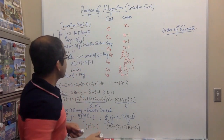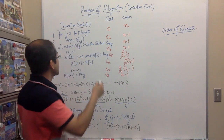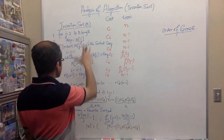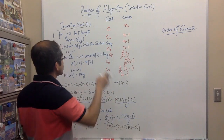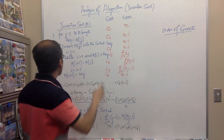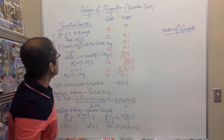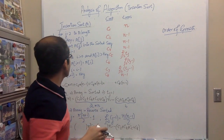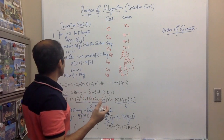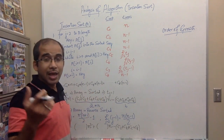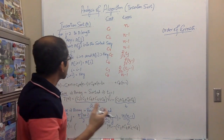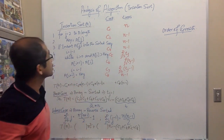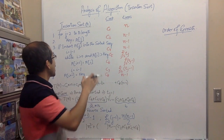The insertion sort procedure takes an input array A. The for loop from j equal to 2 to A.length - for loops and conditional statements execute one more time than the statements within them, because they check the condition one final time before exiting. So this for loop executes n times, with cost c1.